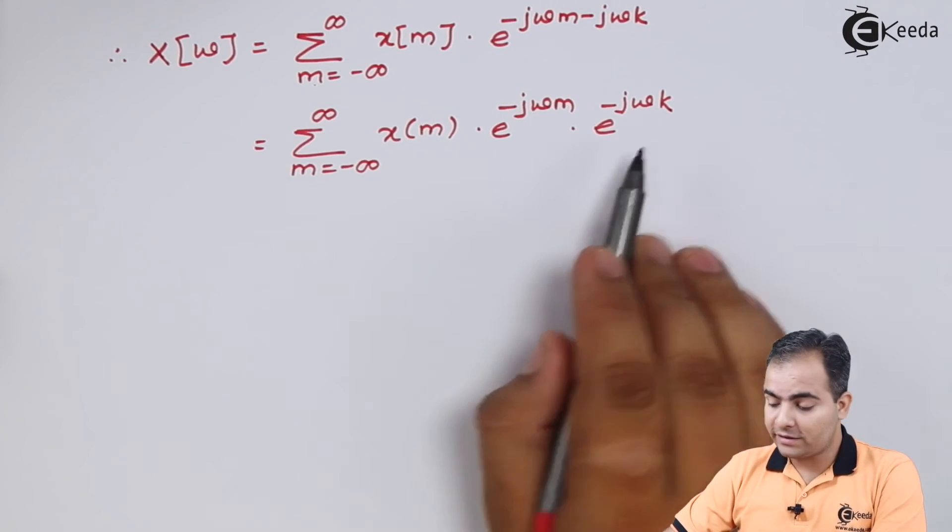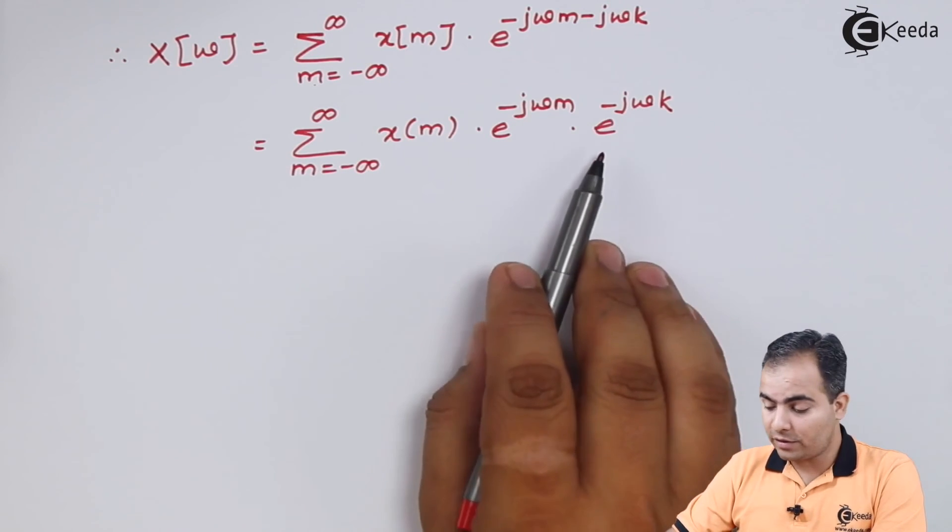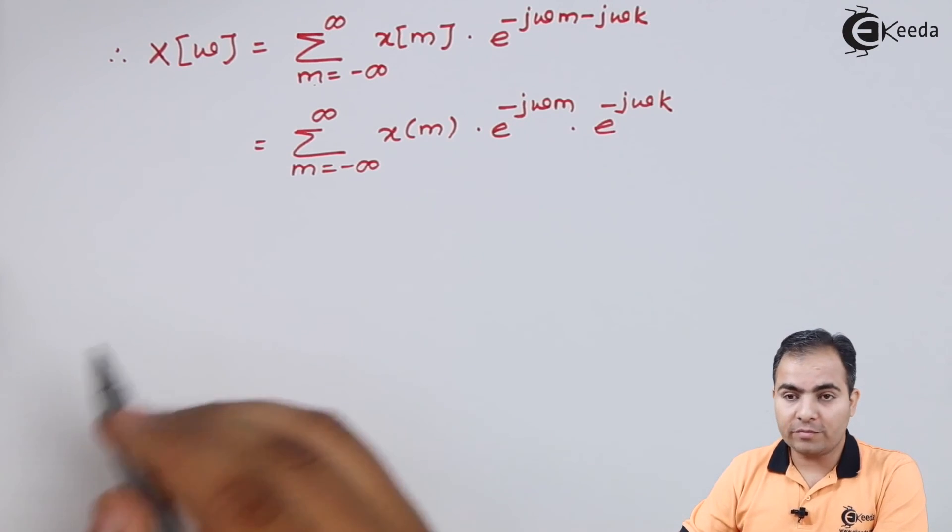After separating, I can say that e to the power minus jωk is a constant term, so I will write it outside this summation bracket.